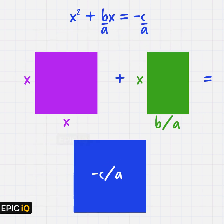This visual method is called completing the square, where we basically turn this equation into two squares of equal area. On the left-hand side, we have a square with side x and a rectangle with sides x and b/a. We put c/a to the right-hand side, and it will be a square with area -c/a.